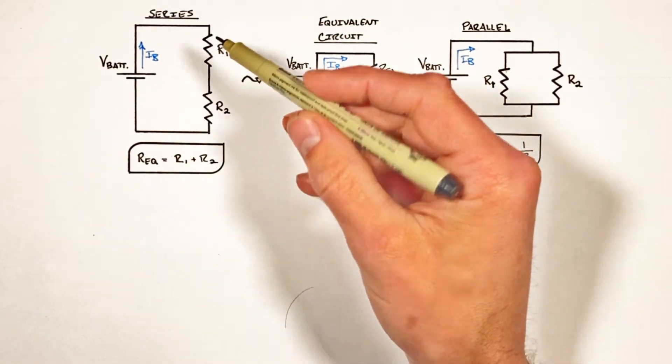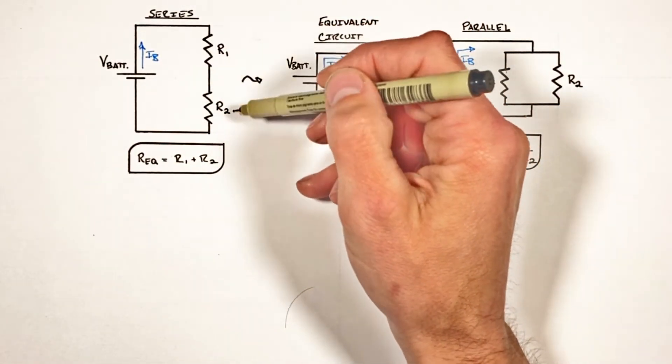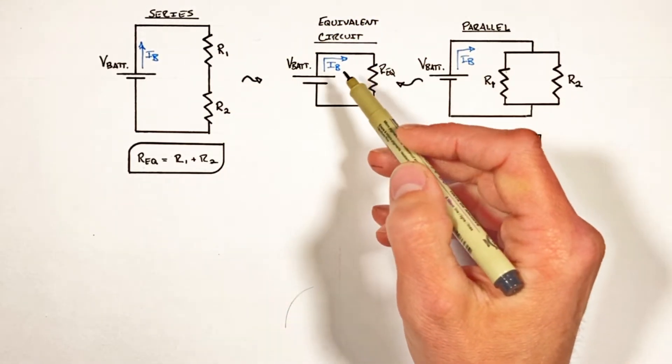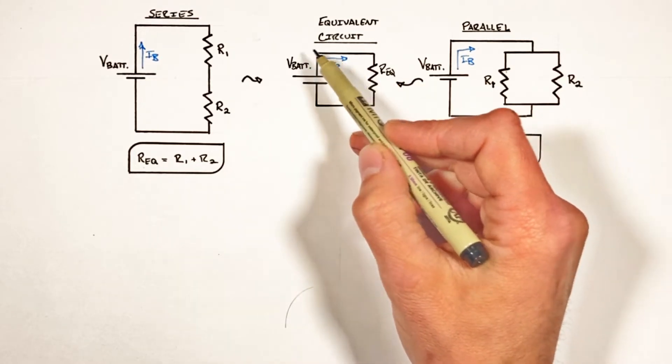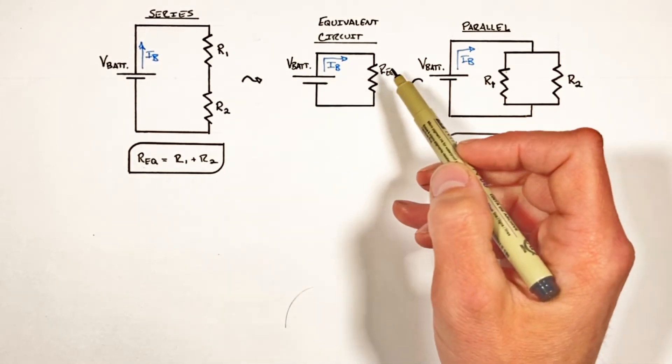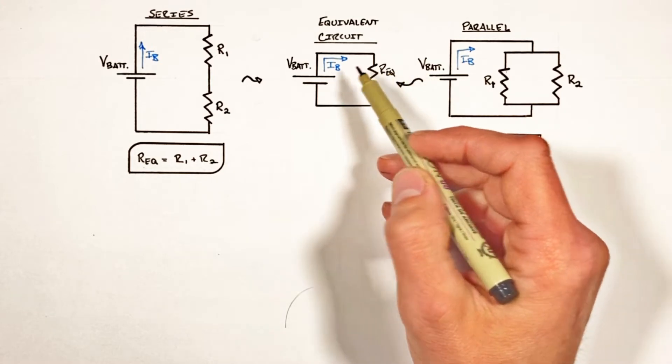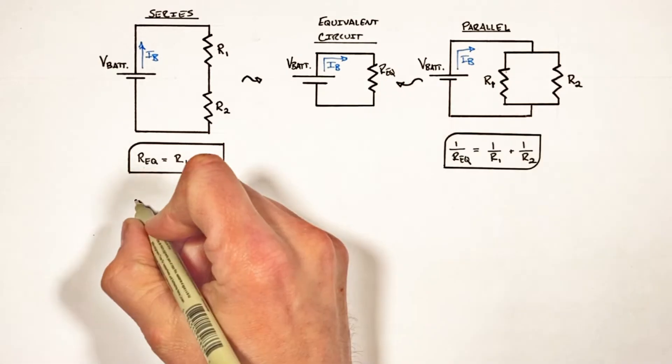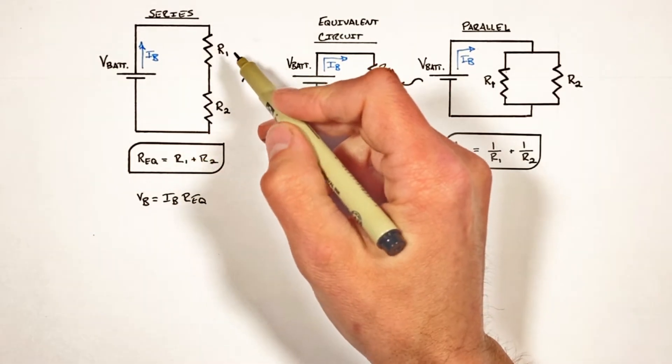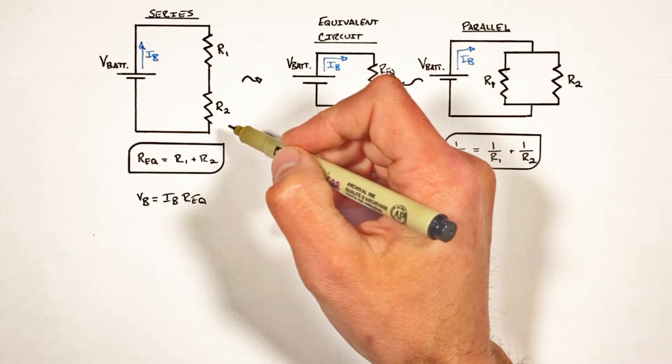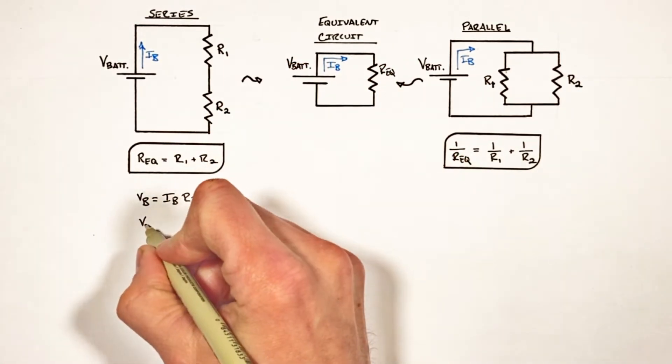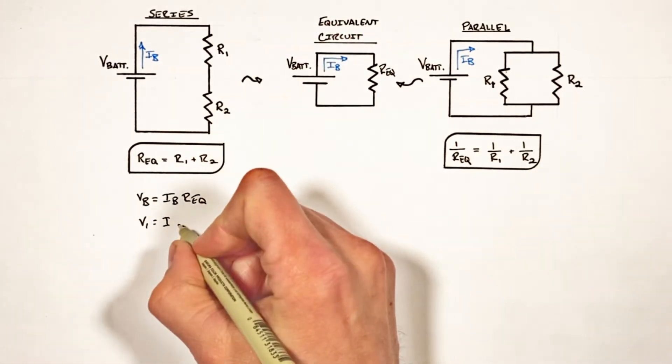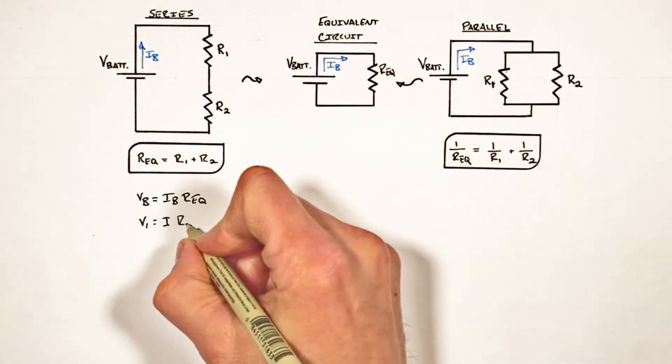V equals IR applies to this resistor as well as this resistor as well as the battery. But the catch is V in Ohm's law isn't always the voltage of the battery. In the case of our resistors, it's the voltage used up in that particular resistor. So sure, when you have a single resistor hooked up to a single battery, like we do with our equivalent circuit here, then yes the V of the battery is going to equal I times R of the resistor. But applying Ohm's law to each of these individual resistors, we get the voltage across this first resistor—we'll call it V1—is equal to the current through this resistor multiplied by its resistance, we'll call that R1.